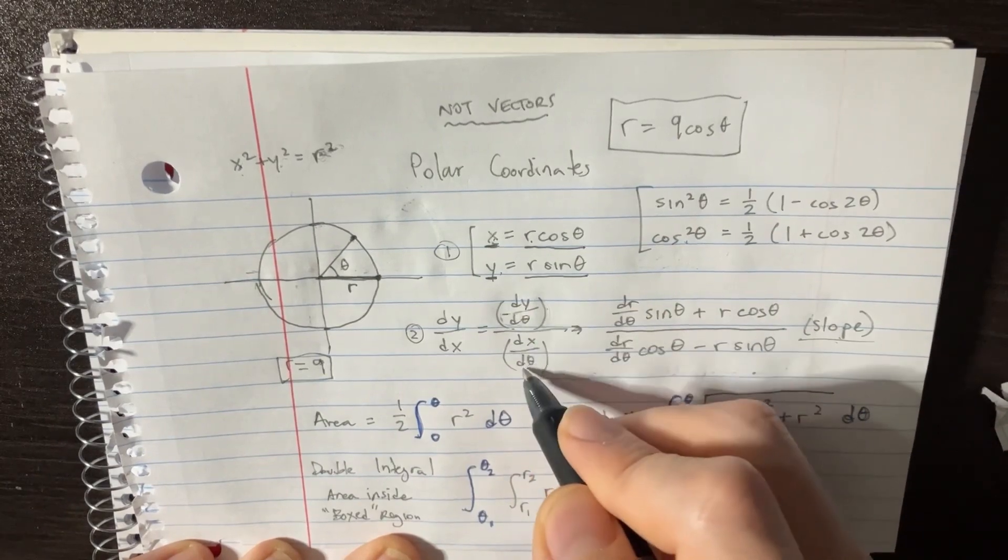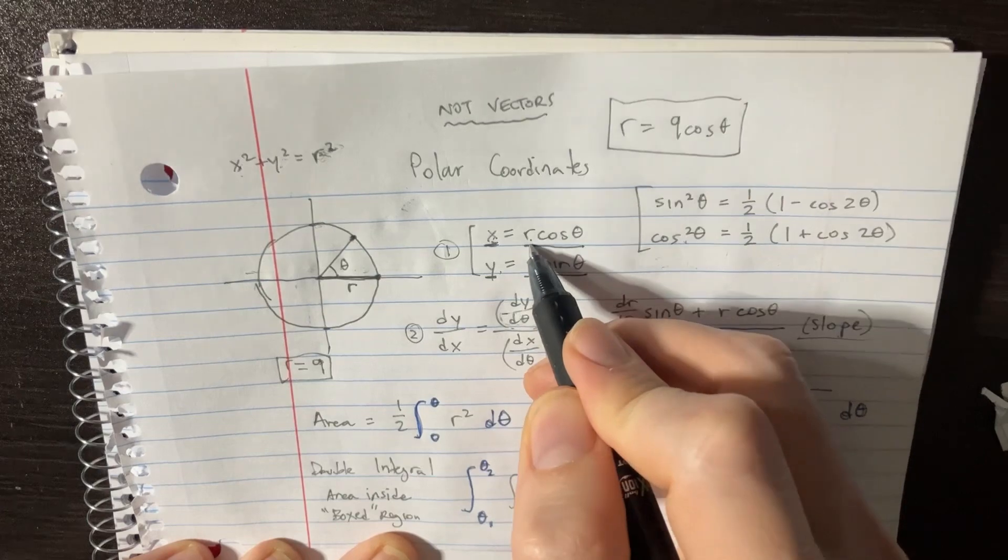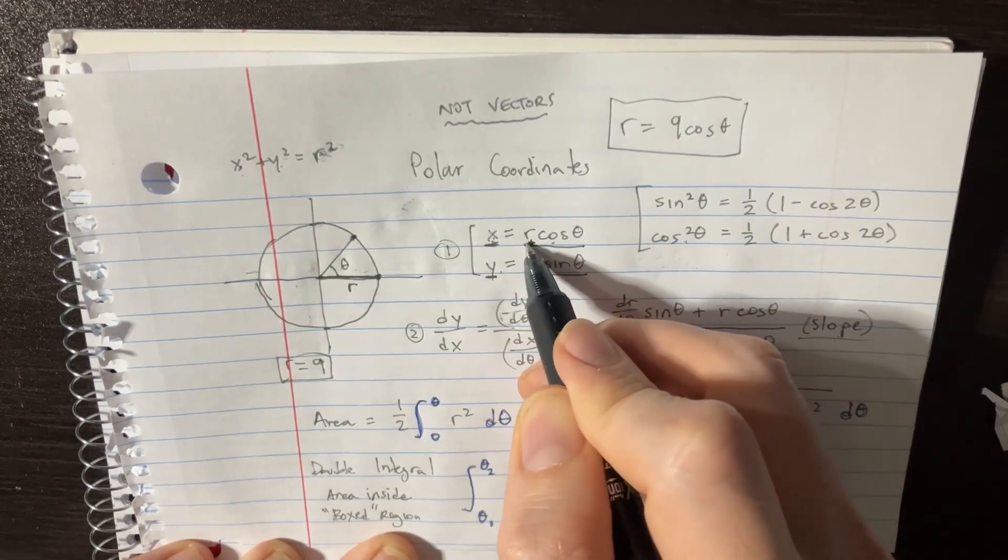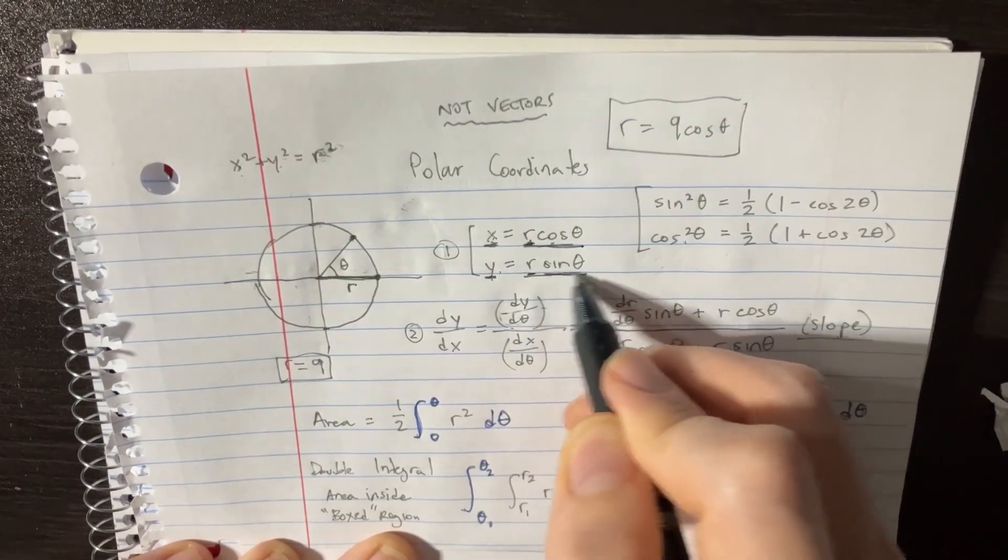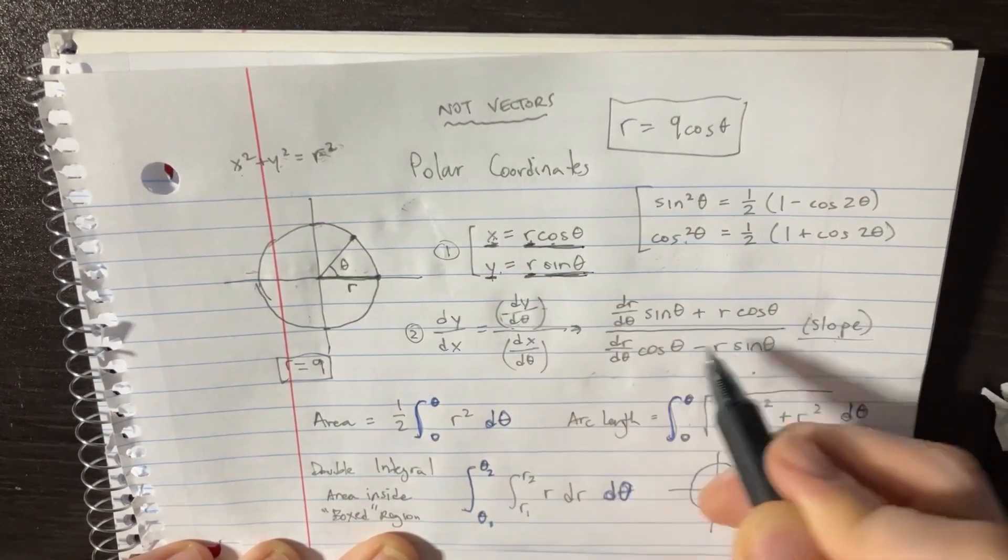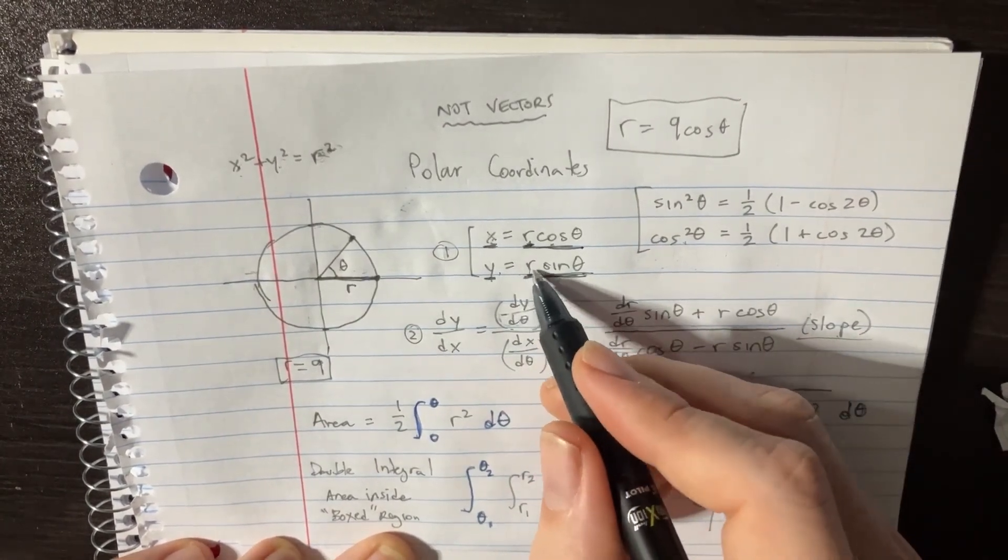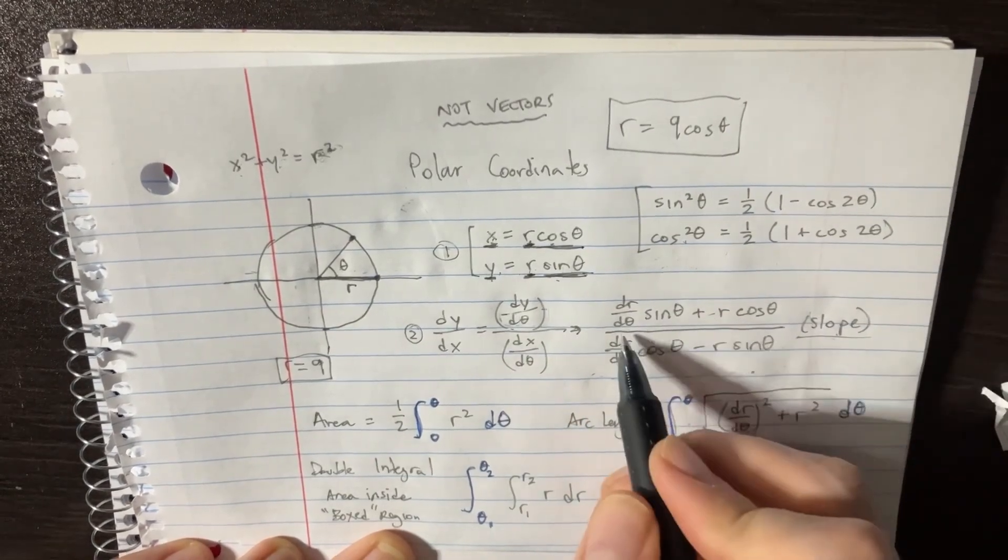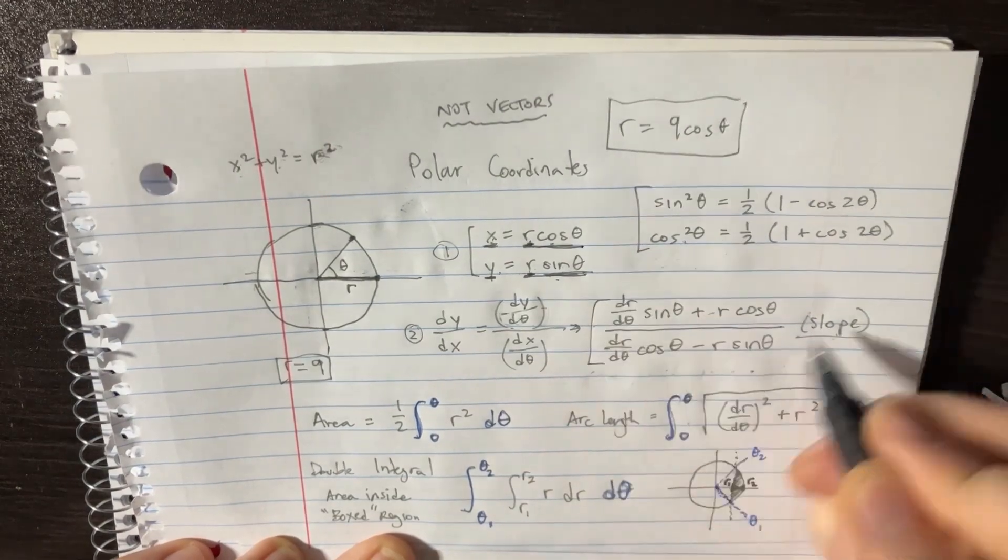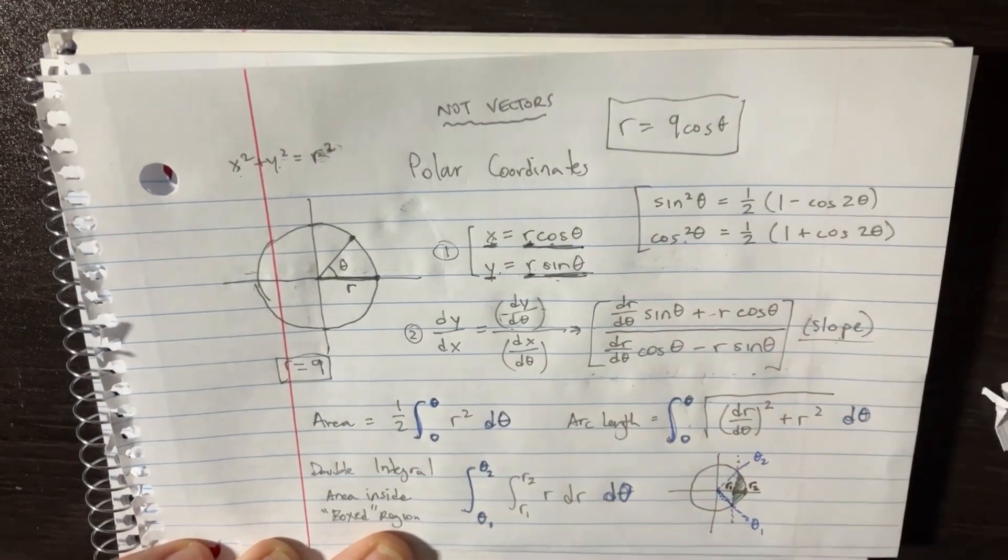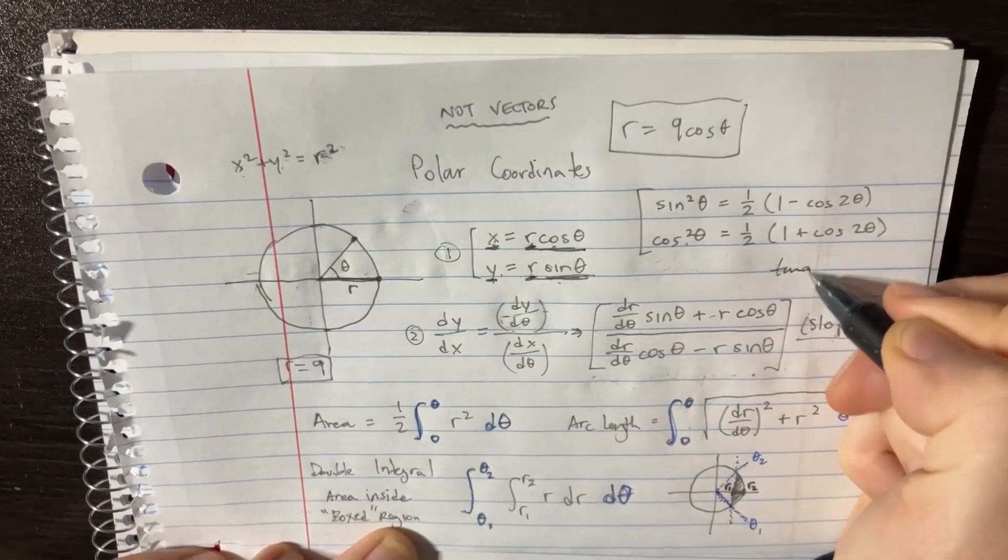So dy over dx is just going to be, after you do the product rule, because it's r sine theta, these are two separate functions, so you got to do dr/dtheta times sine theta and then plus r times the derivative of that one. Then you do that on the bottom as well. And this is pretty complicated, but yes, this is the correct total equation for slope. One way that you can kind of think of this is what is the slope? The slope is really like what you're trying to find tangents right?